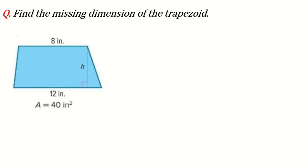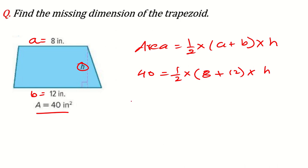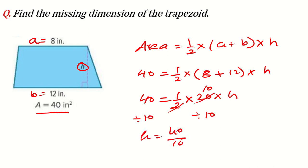Find the missing dimension of the trapezoid. The area of a trapezoid is: Area = ½ × (a + b) × h. Here area is 40, a = 8, b = 12, height is unknown. So: 40 = ½ × (8 + 12) × H → 40 = ½ × 20 × H → 40 = 10H. Divide both sides by 10: H = 40 ÷ 10 = 4 inches.